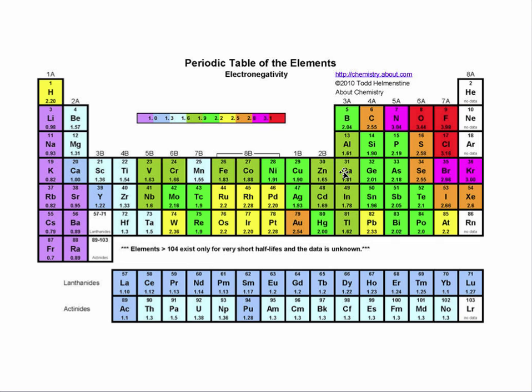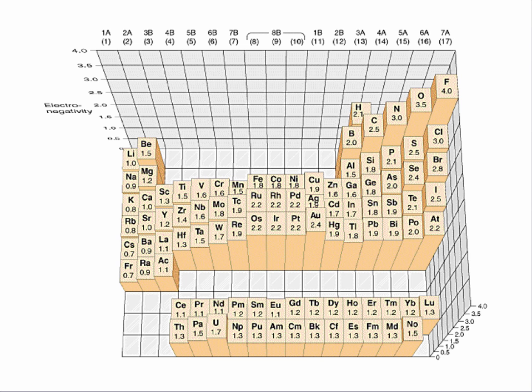The general trend is as we approach fluorine from the left to the right, the electronegativity increases. Another way to look at this is to make a three-dimensional type of landscape picture. Here you can see that a lot of those elements like the alkali metals and the alkaline earth metals that are very reactive.